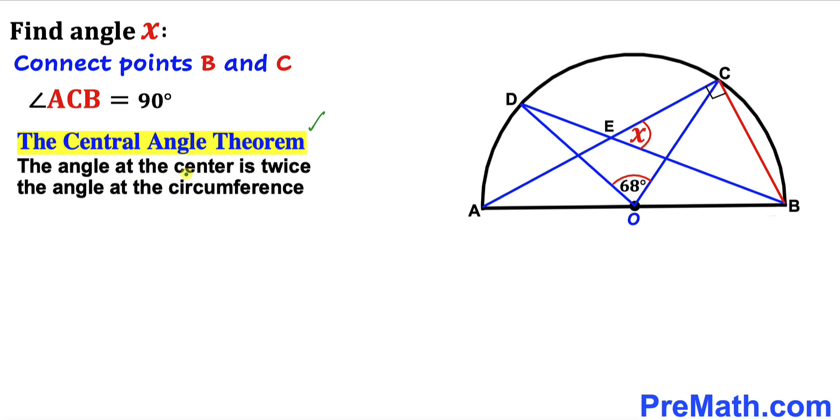According to this theorem, the angle at the center is twice the angle at the circumference. Now we can see our angle at the center is 68 degrees. This central angle subtends this whole arc. This angle is at the circumference and subtends the same arc as well. Therefore, according to the central angle theorem, this angle has got to be half of 68 degrees. So this angle is going to be 34 degrees.